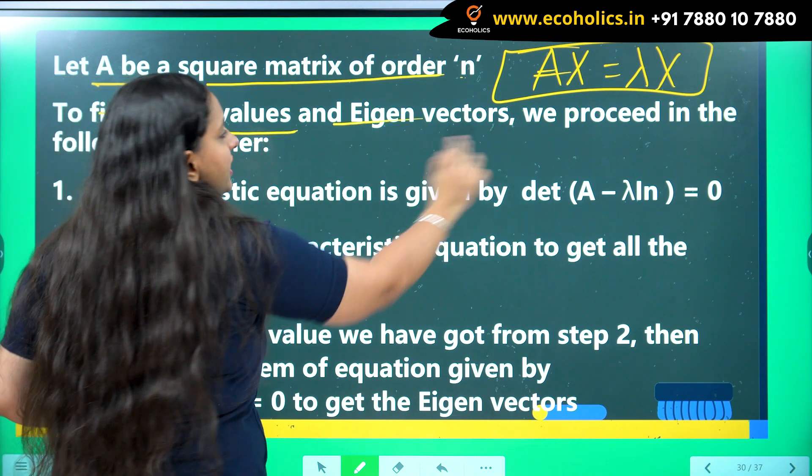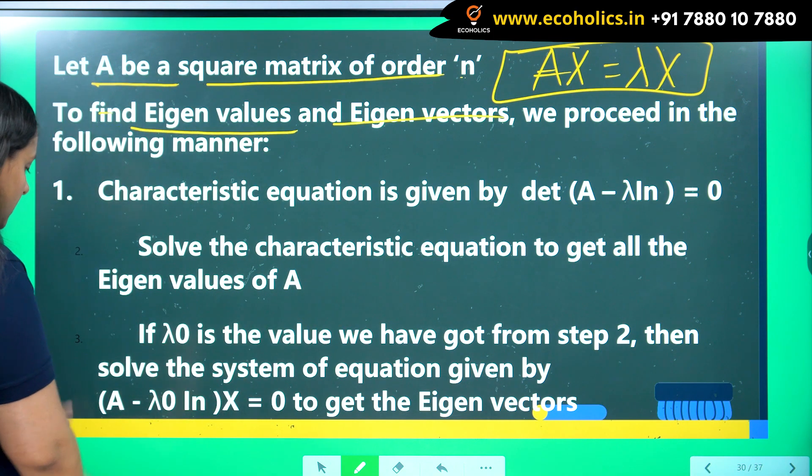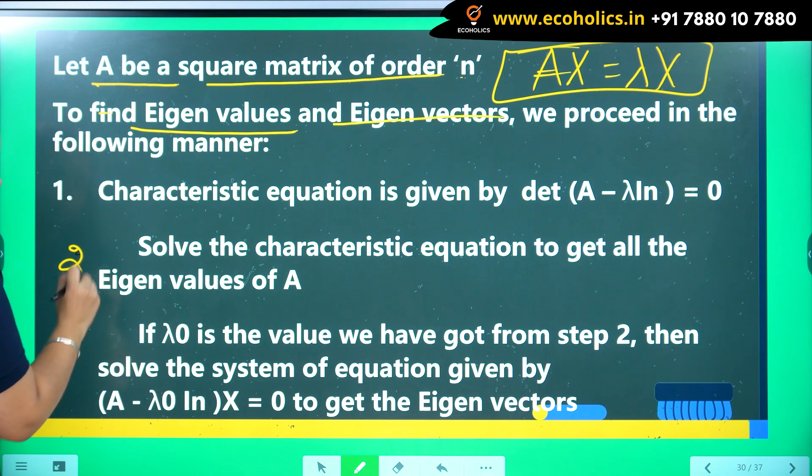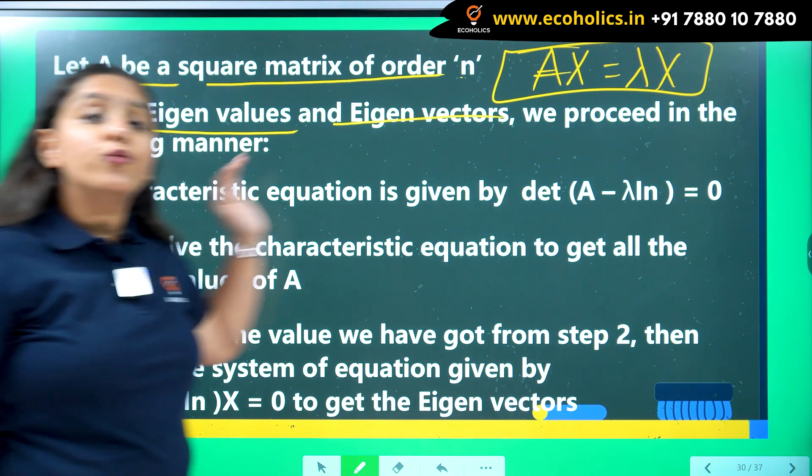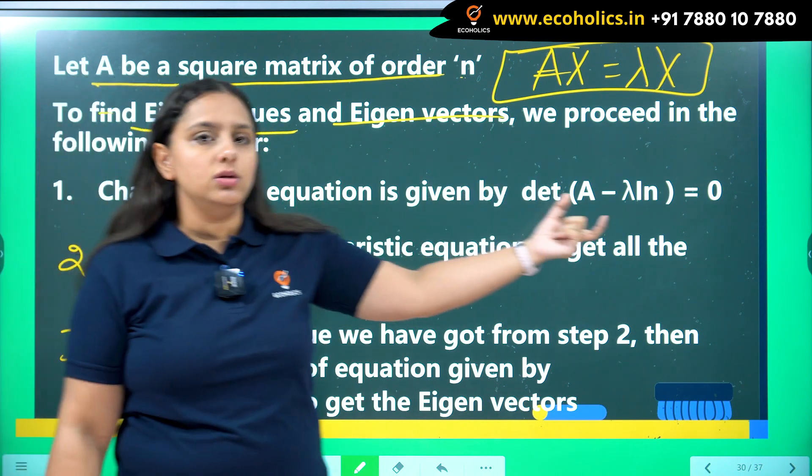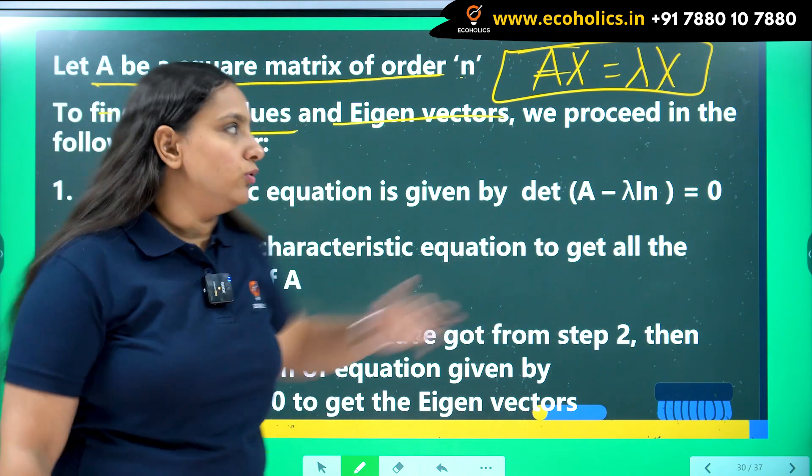To find eigenvalues and eigenvectors, these are the steps given here. This is step number 2, this is step number 3. First we work with the characteristic equation to get the eigenvalues.